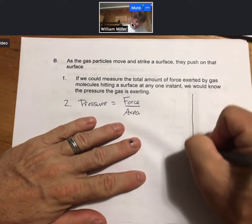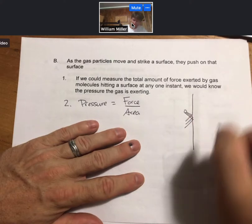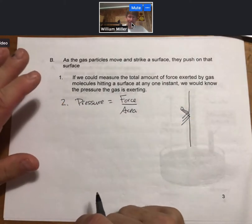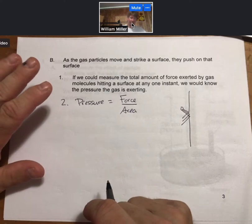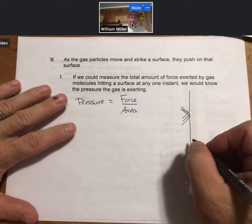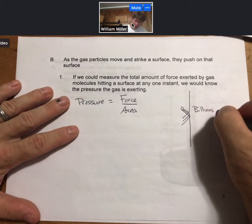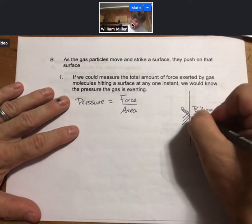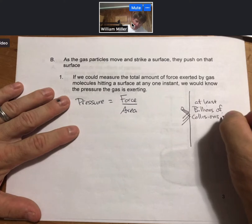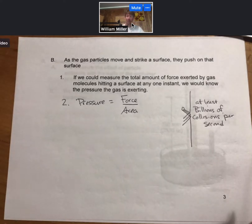And so remember we drew the collisions with the wall of a gas phase molecule. And in a very real way, though we cannot see the gas particles striking the surface, in a very real way that's how pressure is created on surfaces through billions of collisions per second. So at least billions of collisions per second. So even though each gas particle is relatively small, get enough of them together it creates a measurable pressure.